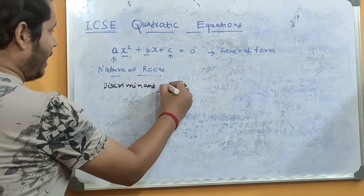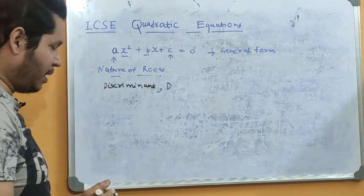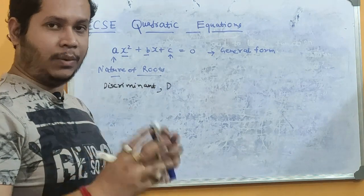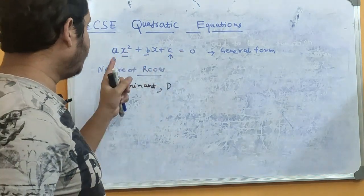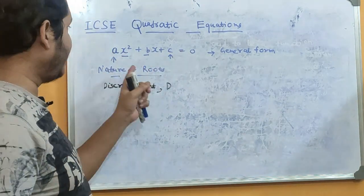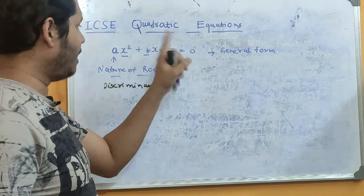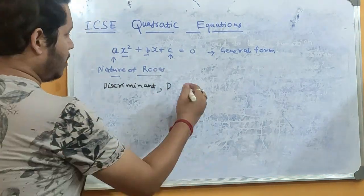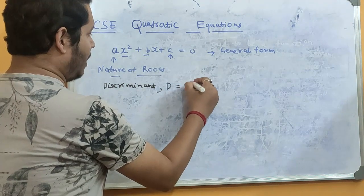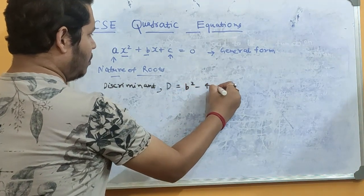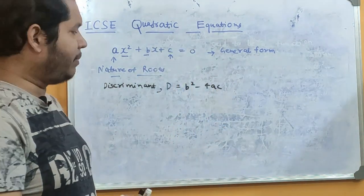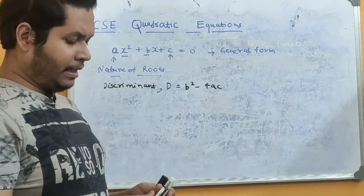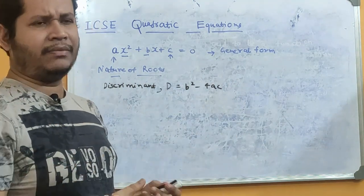To understand the nature of roots, we use a term called the discriminant, which we denote by capital D. If you have a given equation in general form, your first job is to find the three coefficients a, b, and c. The formula for the discriminant is: D = b² − 4ac. For any given equation, simply find the value of D using this formula.